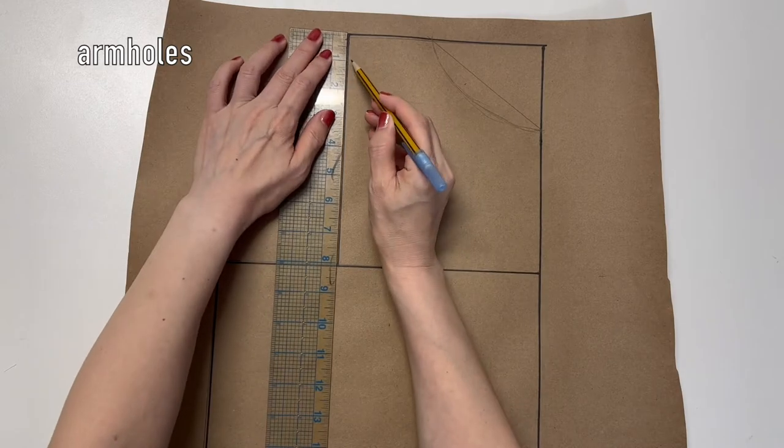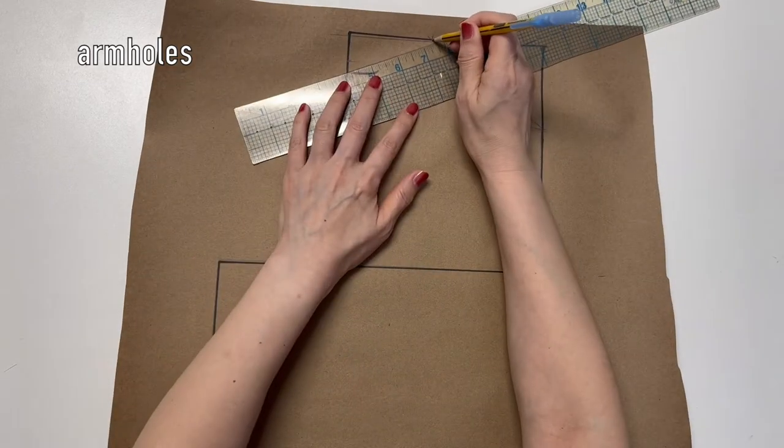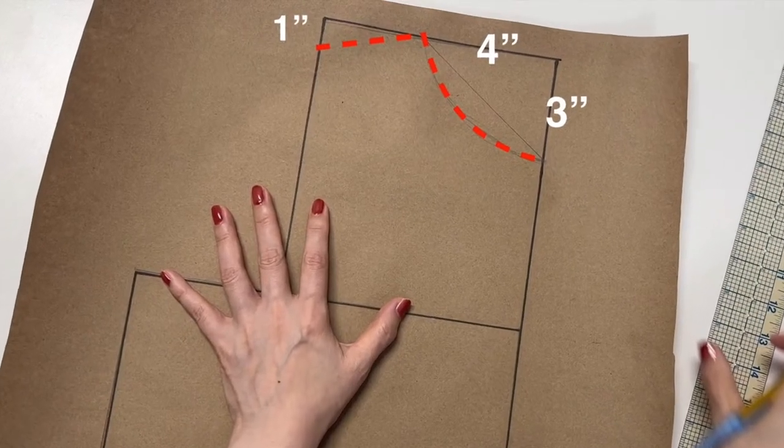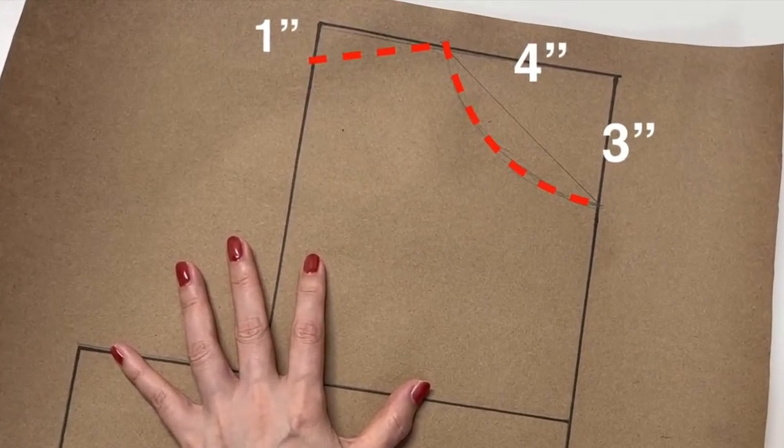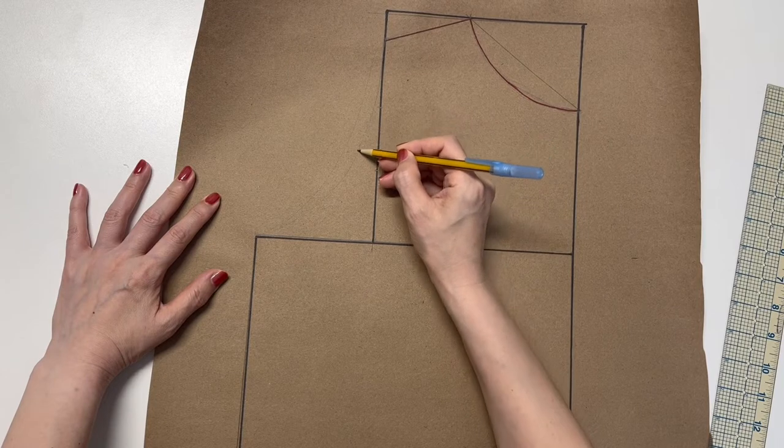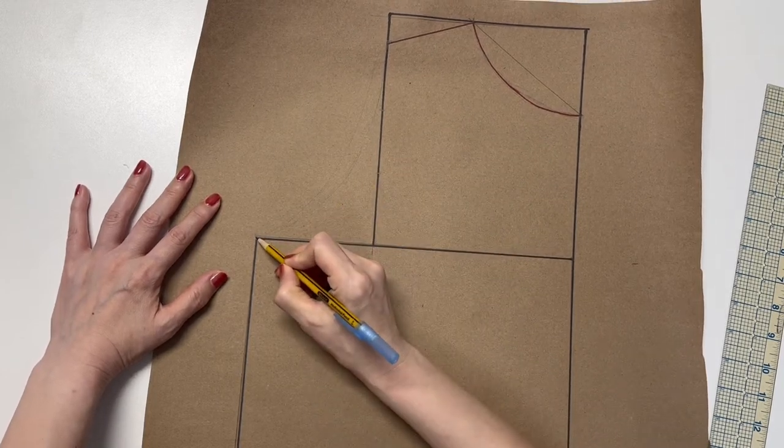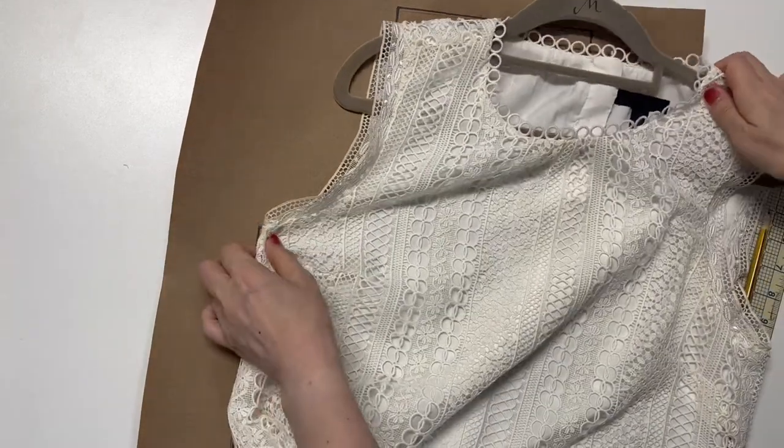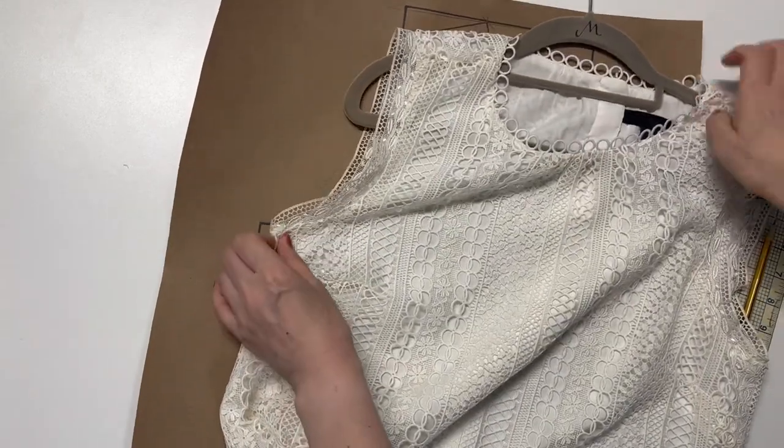Draw a line one inch down from the neckline. It's gonna be the shoulder. Make a curved line to the armpit. It's easier to draw with an armhole curved ruler. If not, draw along the armhole using your favorite cloth.